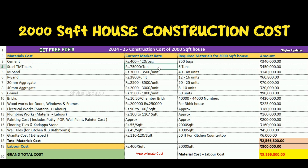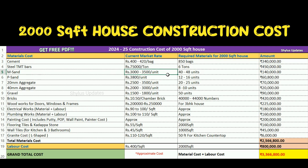Steel TMT bars: the current market rate of steel is ₹75,000 per ton. For a 2,000 square feet house, 6 tons of steel bars are required. The total amount for steel is ₹4,50,000.